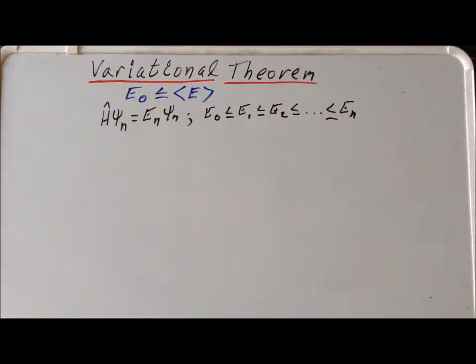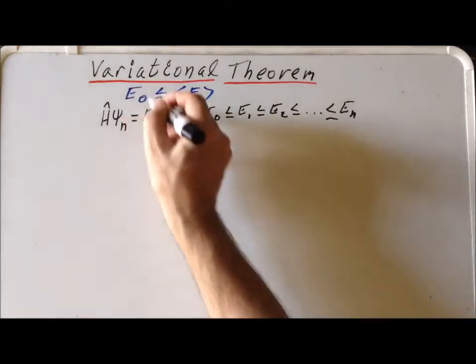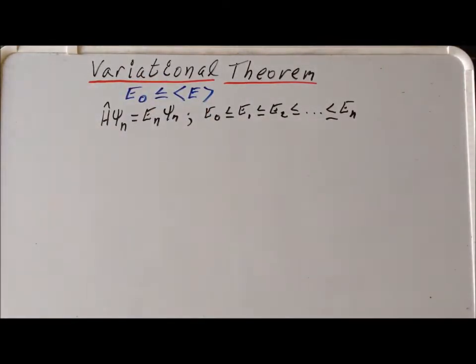So e sub 0 is the smallest in energy, and we go in order to the maximum possible eigenvalue. Now let's assume that e sub 0 is the true ground state energy.